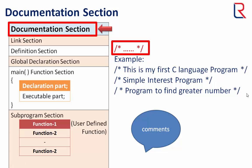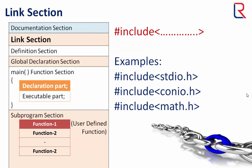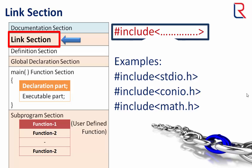Now time to link section. This provides instructions to the compiler to link functions from the system library, that is header files. We use hash include, the preprocessor directive, to include or link header files. Examples are stdio.h, conio.h, math.h, etc.